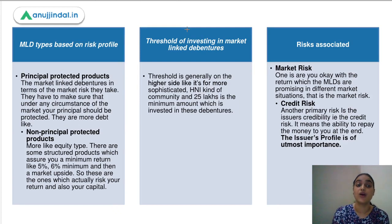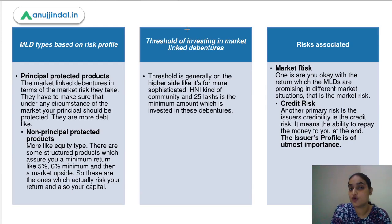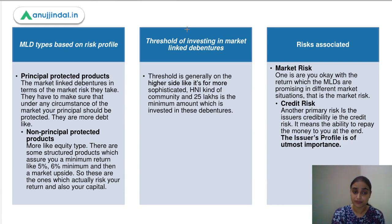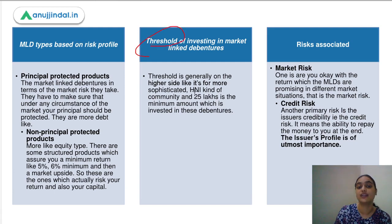In terms of types, on the basis of risk profile we have principal protected and non-principal protected products. Principal protected debentures guarantee you will get back your principal amount — they are more debt-like. Non-principal protected ones offer some fixed minimum return with a market upside but carry an element of risk. Principal protected products are preferred more. The minimum investment threshold is quite large — 25 lakhs is the minimum amount required.